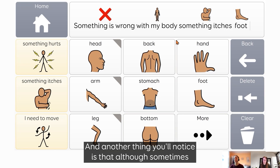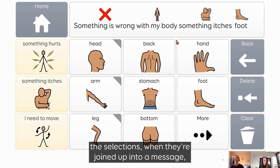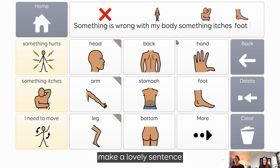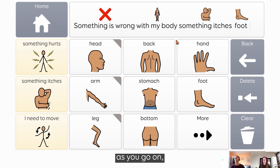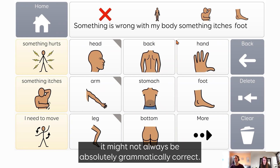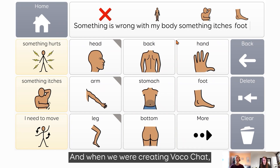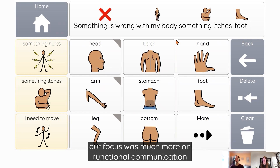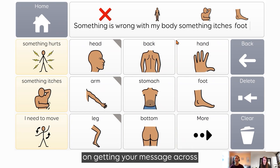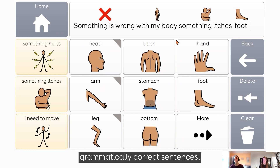Another thing you'll notice is that although sometimes the selections, when they're joined up into a message, make a lovely sentence like 'something is wrong with my body,' as you go on it might not always be absolutely grammatically correct. And when we were creating VocoChat, our focus was much more on functional communication — on getting your message across — than it was on creating perfectly grammatically correct sentences.